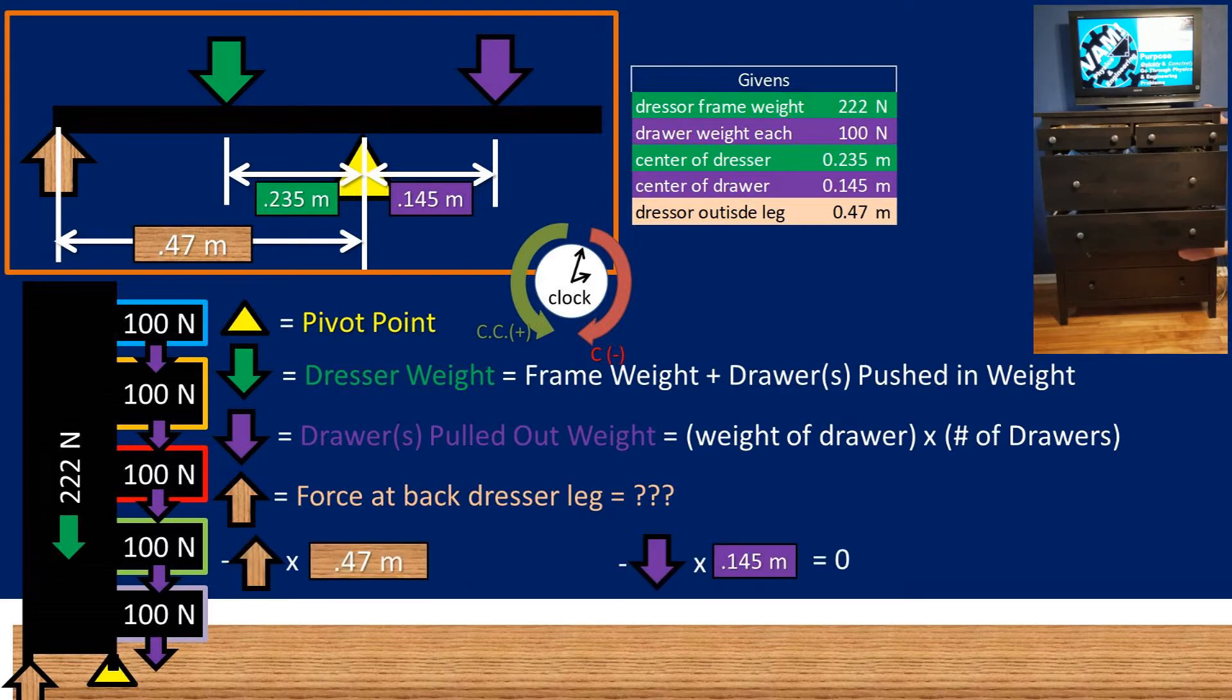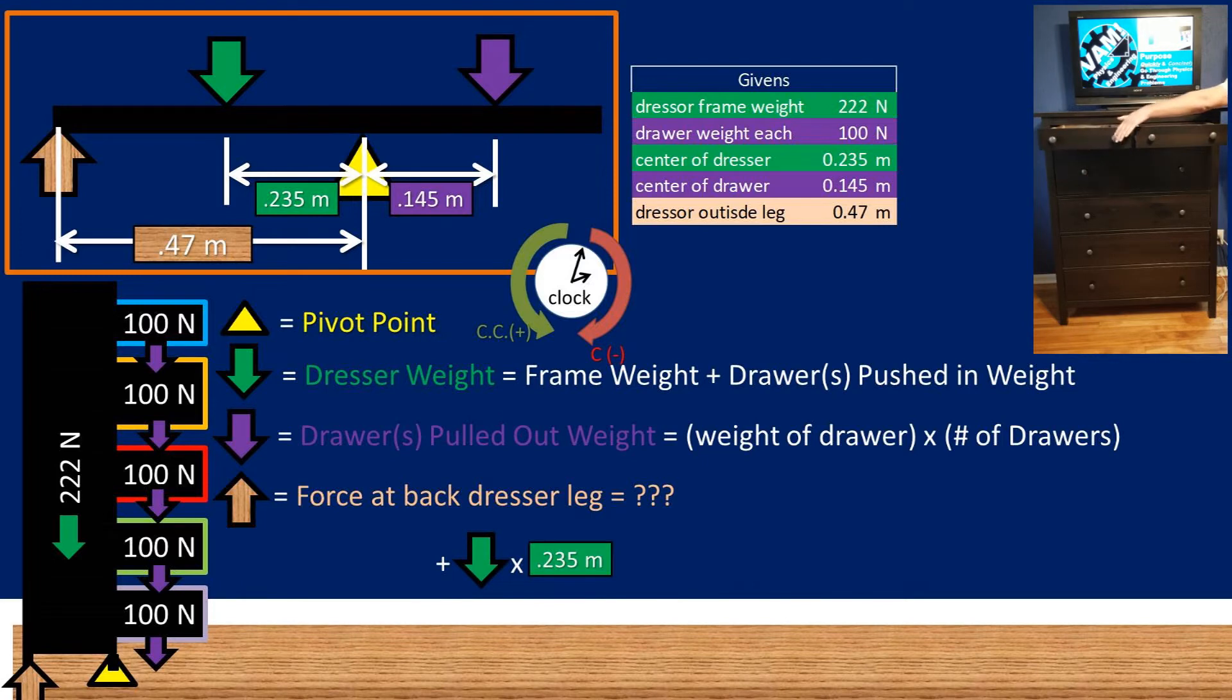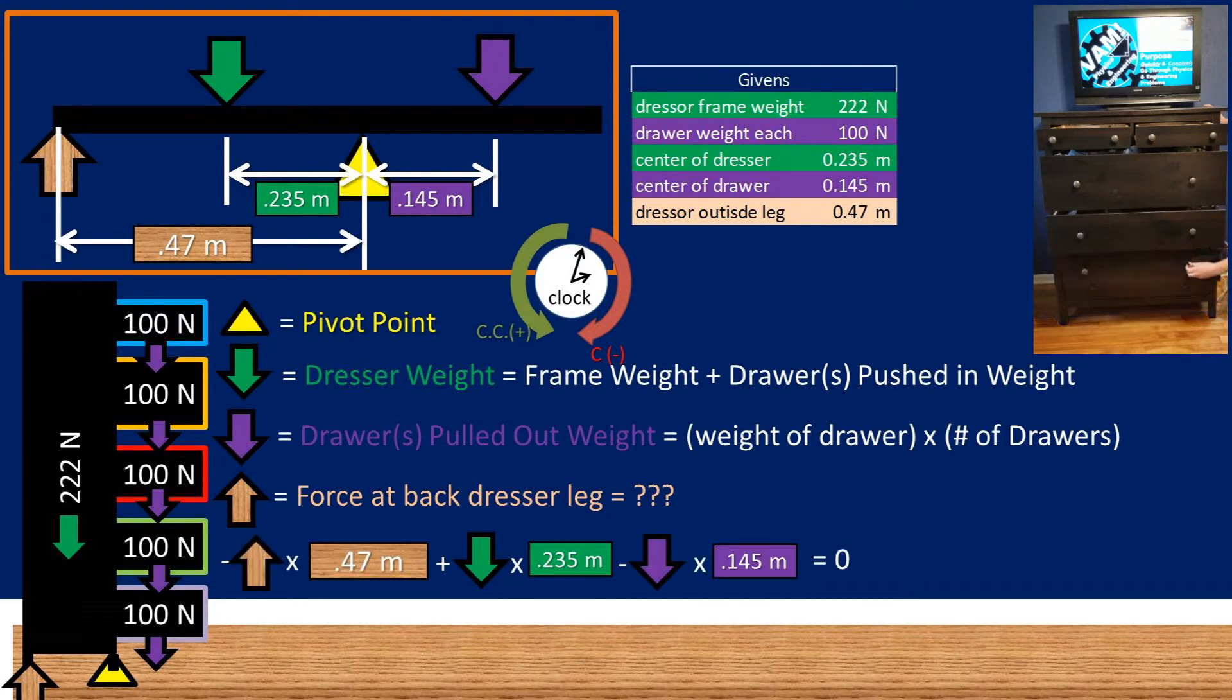With that being said, we notice that the torque from the force from the floor pushing back on the dresser and the force from the drawers that are pulled out are negative because they are going clockwise. Looking at the force from the dresser frame and pushed in drawers, we can see that it is going counterclockwise, so it would be positive. Now we can set this all equal to zero because we assume no movement.